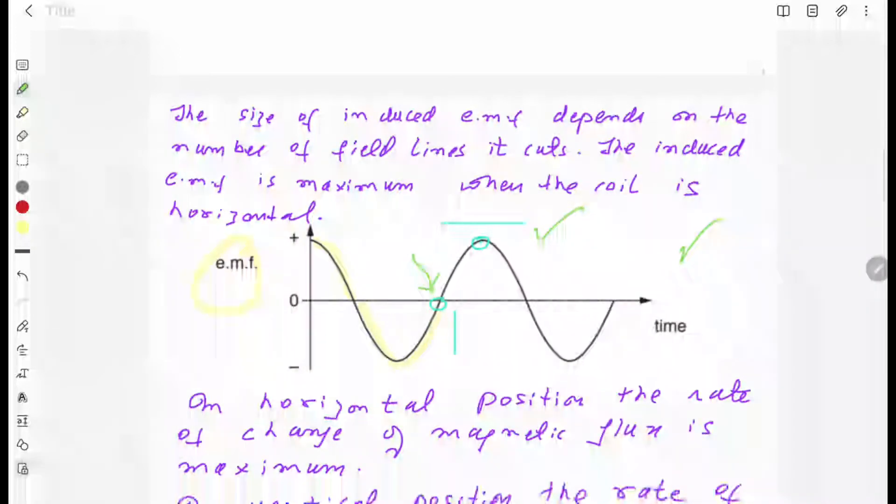So here your EMF is zero and here your EMF is maximum. And this is the horizontal position of the coil and you can see the vertical position of the coil.